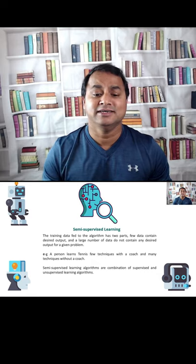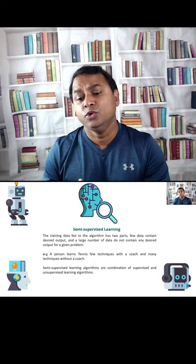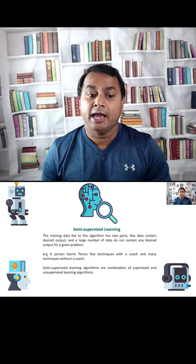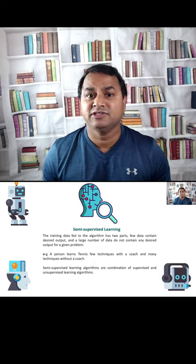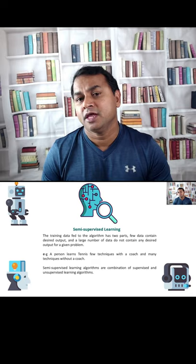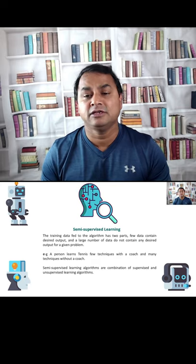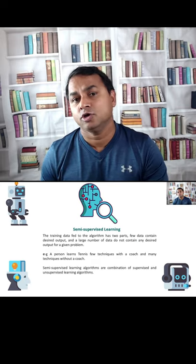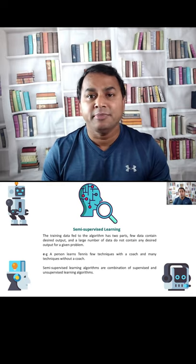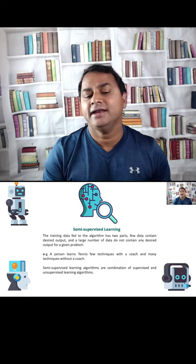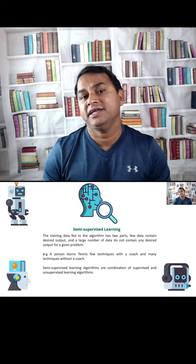For example, a person learns a few tennis techniques with a coach and many techniques without a coach. So in semi-supervised learning, algorithms are a combination of supervised and unsupervised learning algorithms.